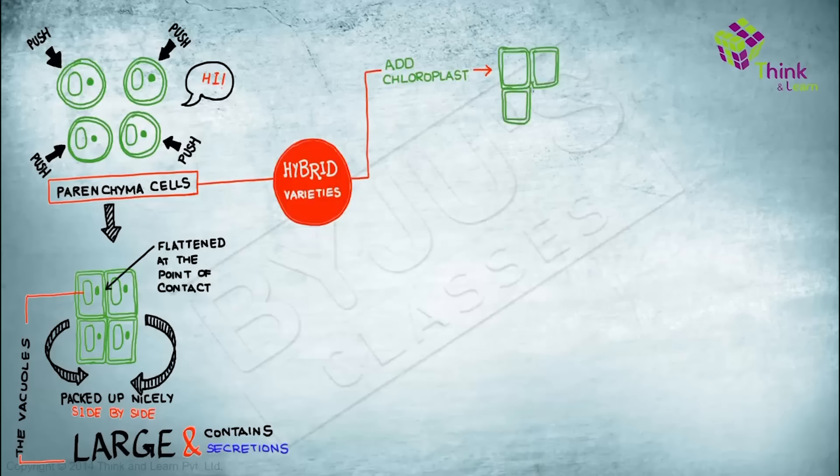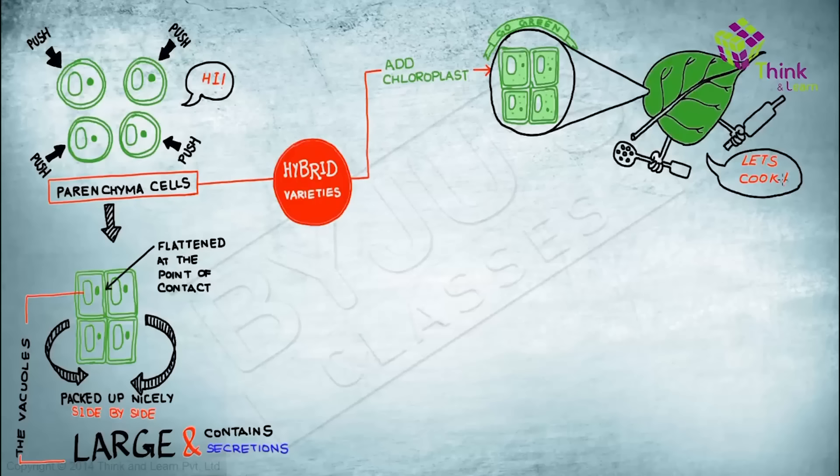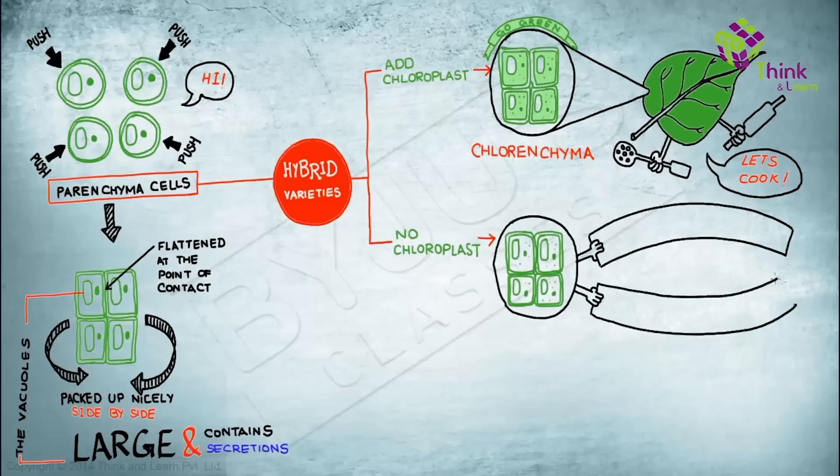Pop a chloroplast into them, not only will it give a nice green color to the cell, but even more importantly, the cell can now carry out the process, the wonderful process of photosynthesis. What are these cells called? Chlorenchyma. Now, if the parenchyma cells don't have chloroplasts, they won't be green obviously and they won't aid in photosynthesis too, but they help in the storage of food and water.